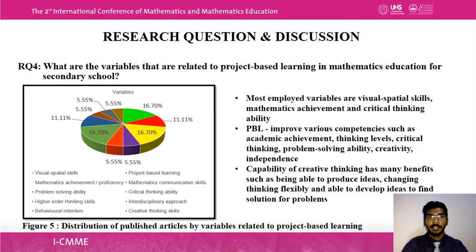The fourth research question is: what are the variables related to project-based learning in mathematics education for secondary school? Ten variables were identified. The most employed are visual-spatial skills, mathematics achievement, and critical thinking ability. These variables show that project-based learning can improve competencies such as academic achievement, thinking levels, critical thinking, problem-solving ability, creativity, and independence. Project-based learning also offers creative thinking capabilities — producing ideas, thinking flexibly, and developing solutions.